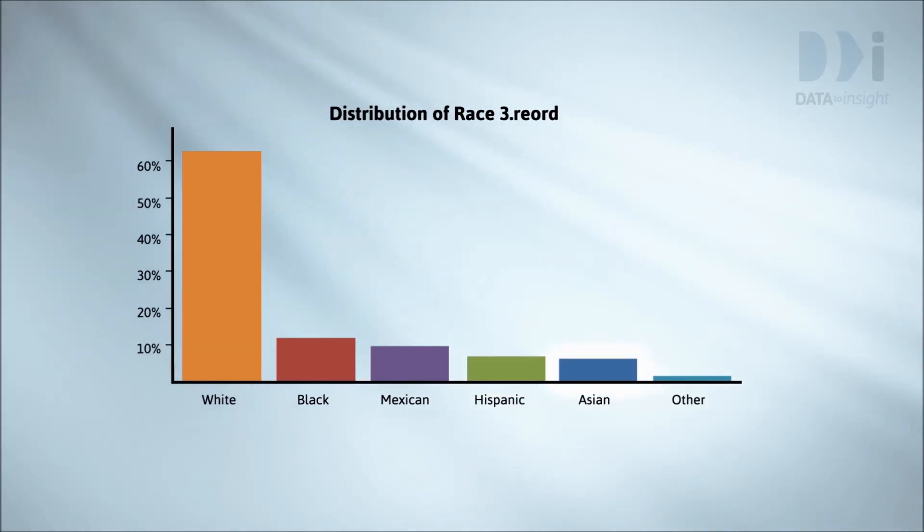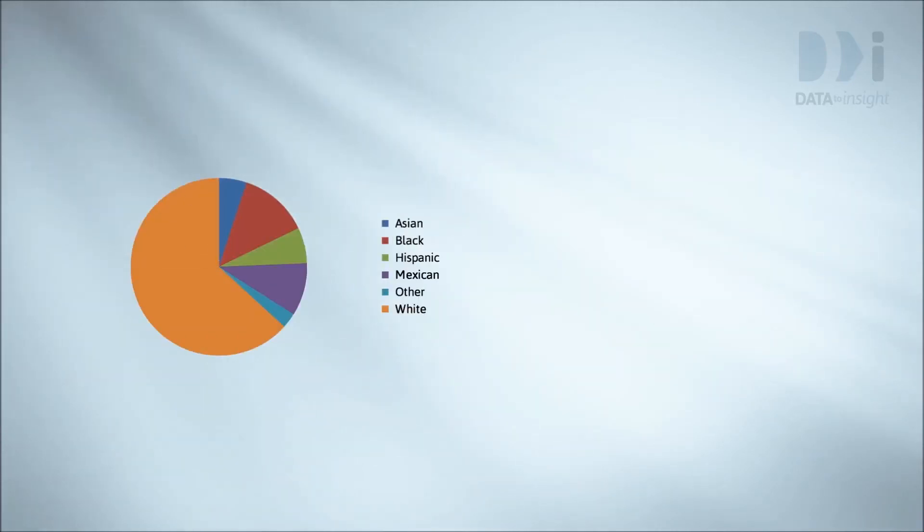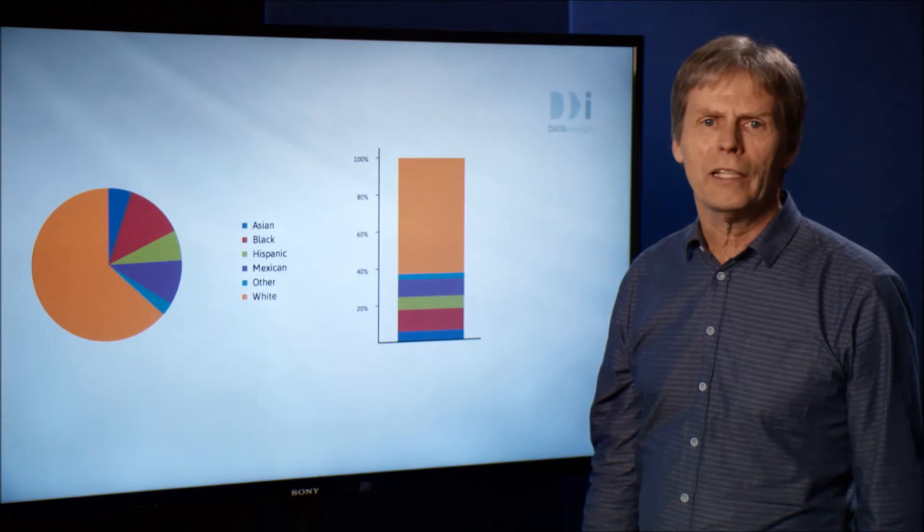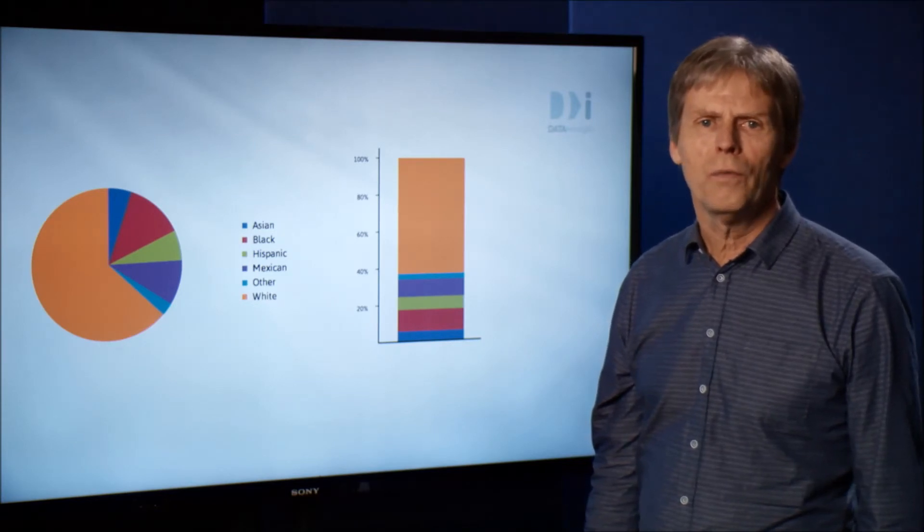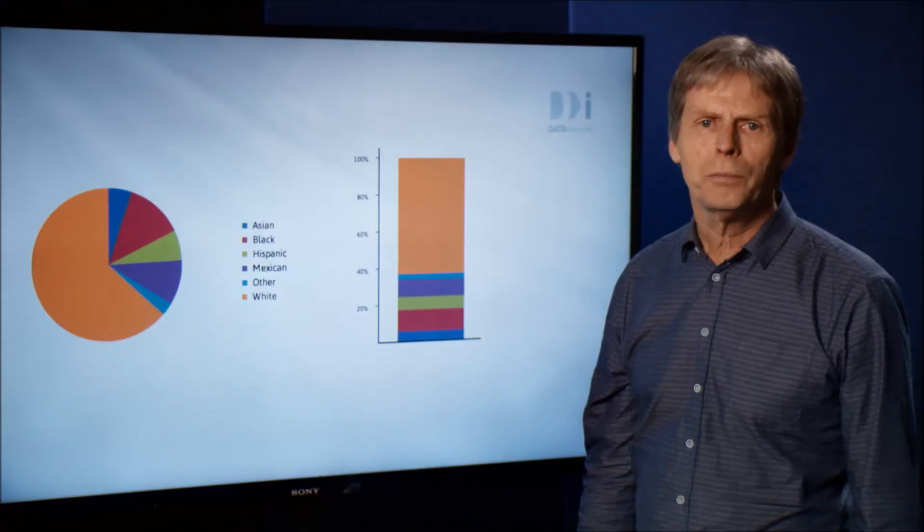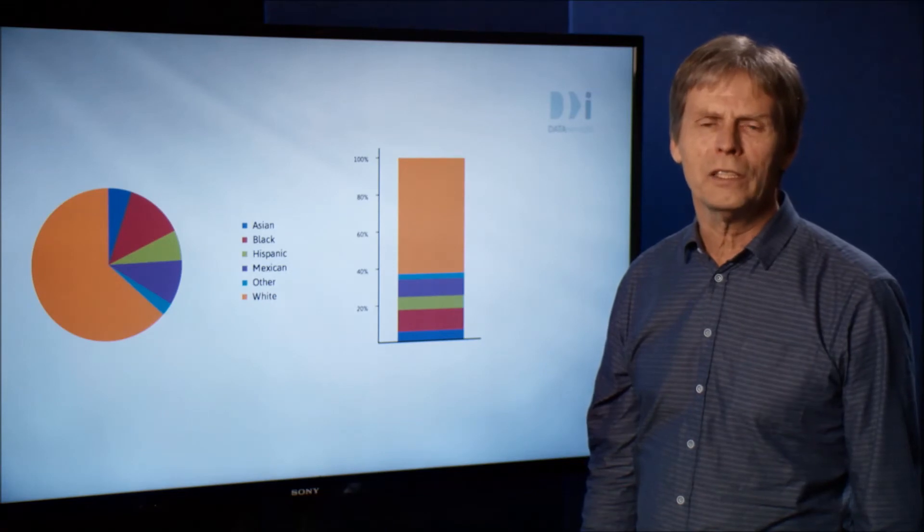The bar chart is our standard tool for plotting categorical data. You might ask, why bar charts in preference to pie charts or stacked bar charts? Pies and stacked bars have the advantages of conveying the sense of being parts of a whole. However, they're not good for discovery because they're not good at letting you see changes and differences. And spotting changes is the lifeblood of discovery.